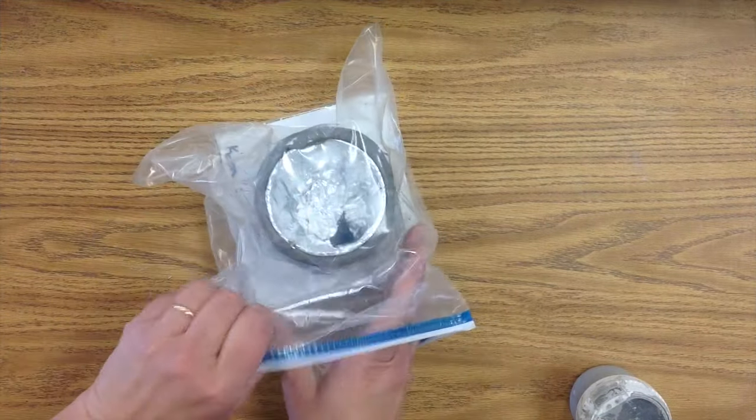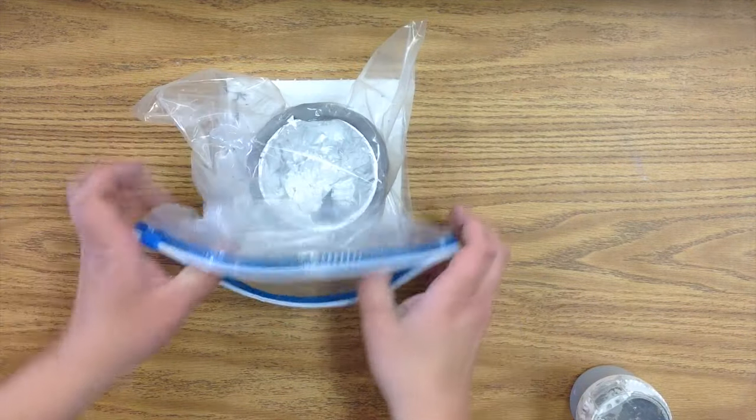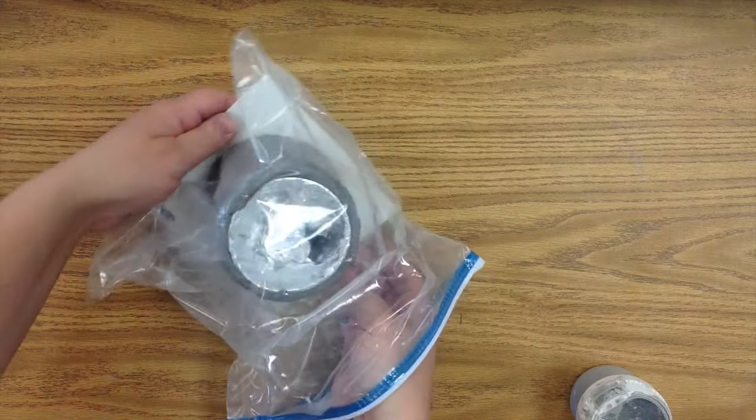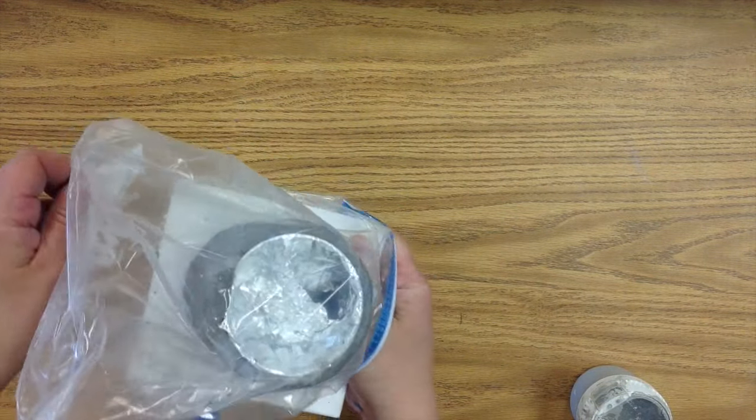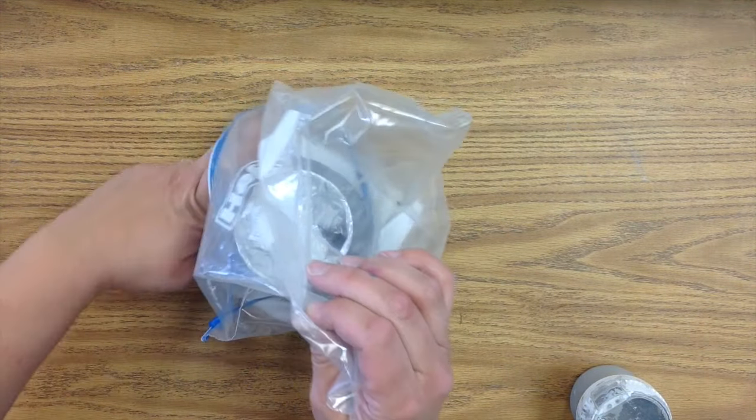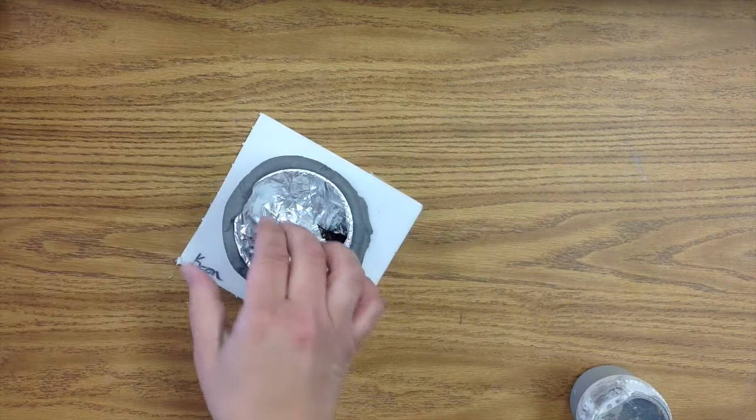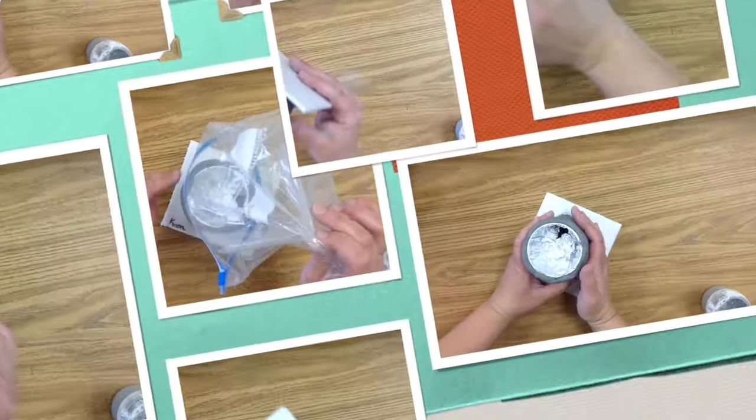When you're done, you're going to very carefully take it out of the bag. Do that by pulling. Don't try to pull it over the top. Instead, work it out from the bottom. Slip it from the bottom and pull it right over at the top of your coil pot.